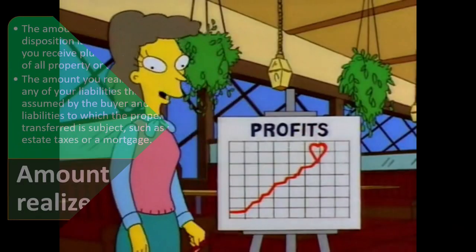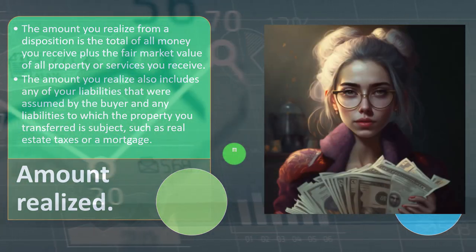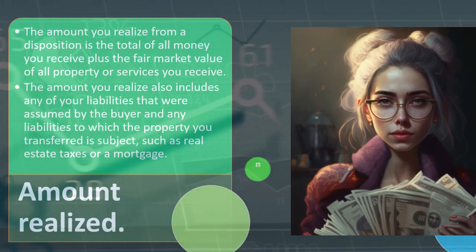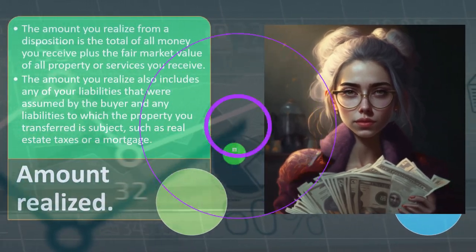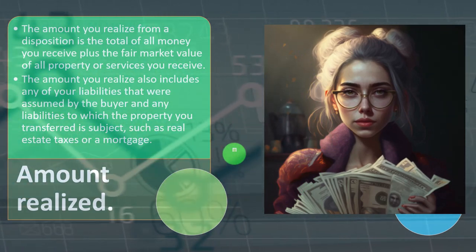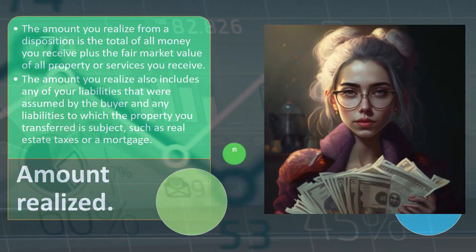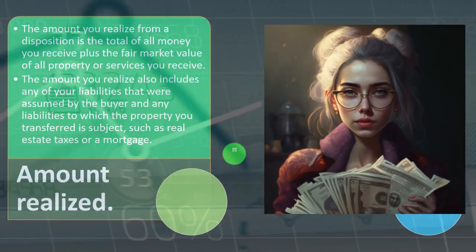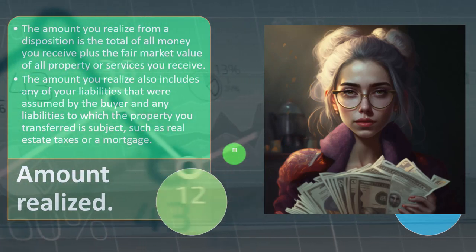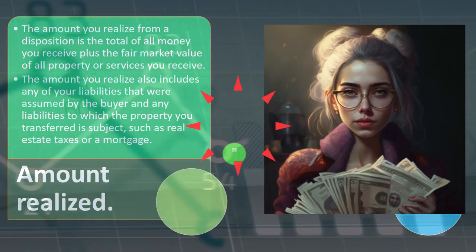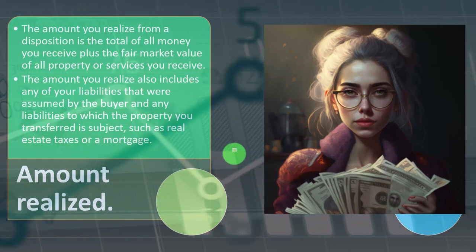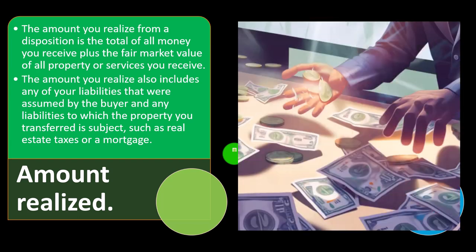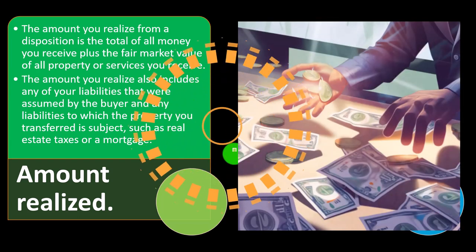If the property doubled in value, you haven't realized the gain until you sell it, because you don't really know how much someone will pay for unique property until you actually sell it. When you sell it, you realize the gain. If they paid you money, it's clear — that's how much you got. But if they paid you something other than money, you have to value what they gave you, which gets more complex. And if they relieved debt that was your debt, that's the same as if they gave you money and you paid off the debt — still a form of income.